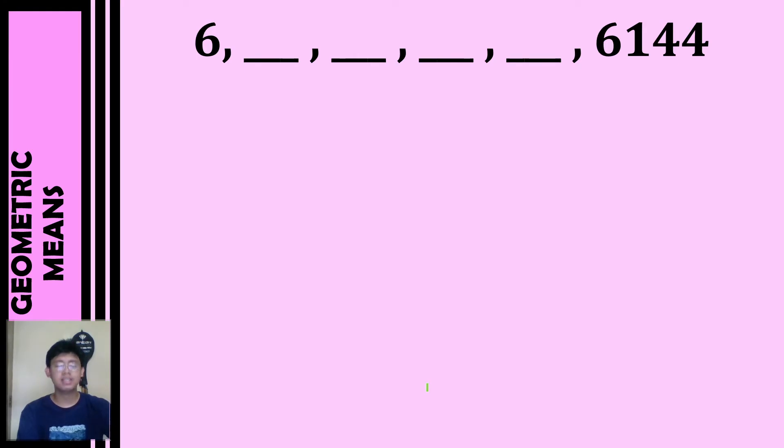Let's have our next example. We have 6, blank, blank, blank, blank, blank, and 6,144. So we have 4 missing terms until we reach the end term. So how are we going to solve this?